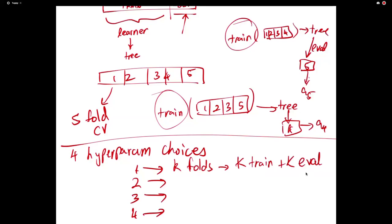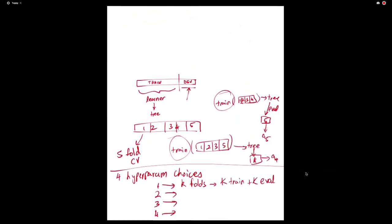There's the question of whether hyperparameters influence each other — yes, they do, which is why you take the cross product of all possible choices. That's why the number of hyperparameter combinations can become really large. Once you find a good hyperparameter via cross-validation, you put the dev set back into the training set to build a combined training set, and train the final model on all of it.